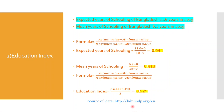These ranges have also been set by UNDP. The formula is actual value minus minimum value divided by maximum value minus minimum value. For expected years of schooling, we have 11.6 minus 0, divided by 18 minus 0. We get the result 0.6444, which is the expected years of schooling index.